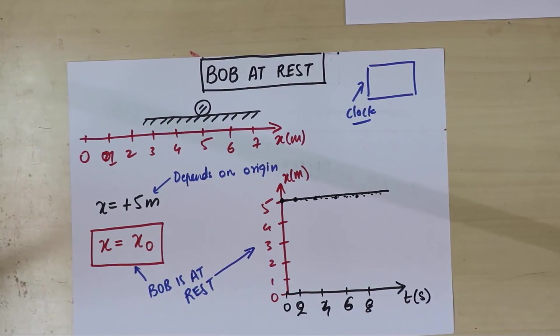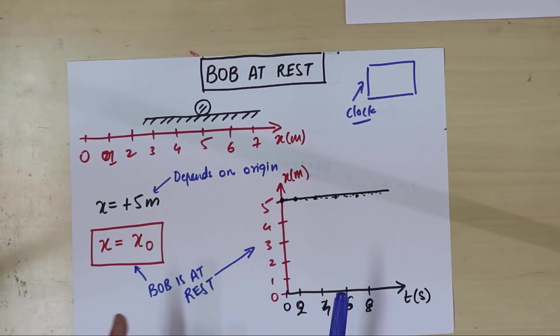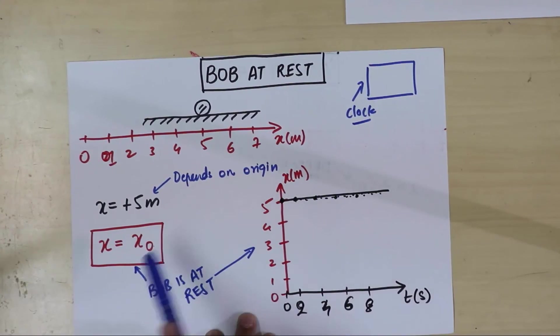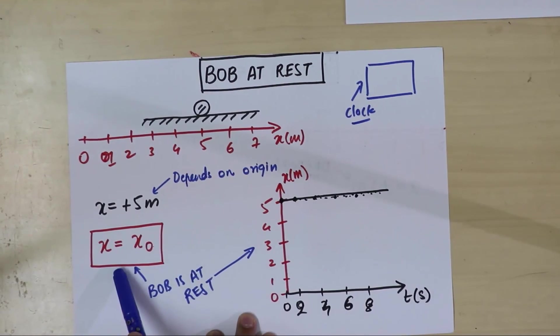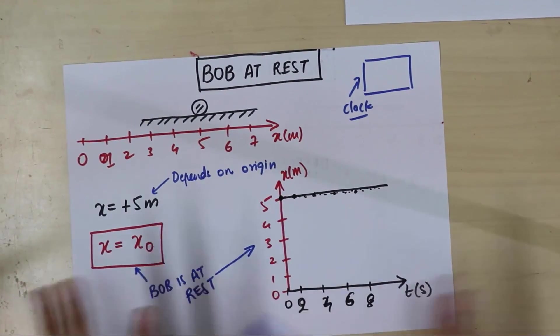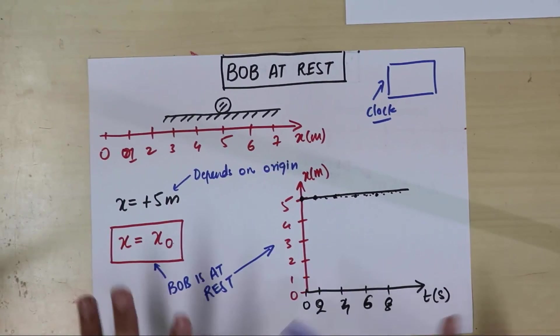So congratulations, we have drawn our first kinematic graph. So we have equations, we have graphs, and they both represent the same thing. So in kinematics, what we're going to do is, I'm going to give you graphs sometimes. I'm going to ask you to build the equation. Sometimes I'll give you the equation and ask you to build the graph. Sometimes I'll give you some situation and you'll have to do both. We're going to do a lot of fun things, but this is basically Bob at rest.